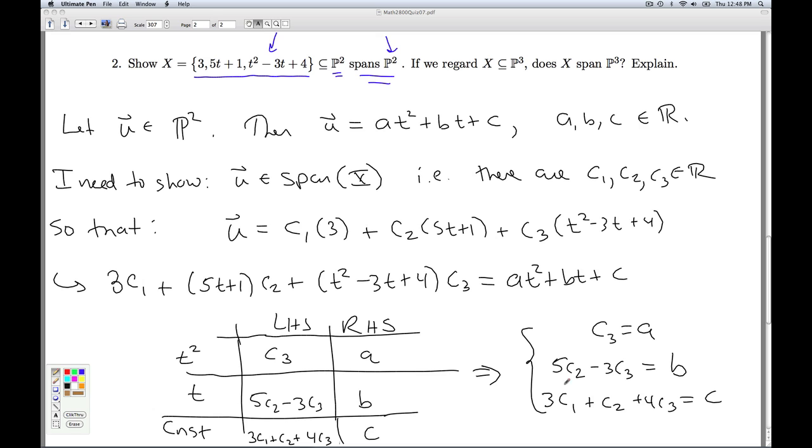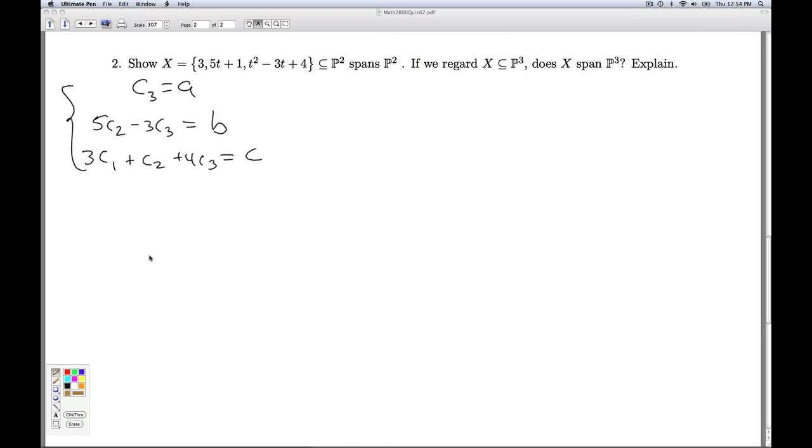And I have to show that this system is consistent for any choice of a, b, and c. Okay, to show that this system of equations is going to have a solution for every choice of a, b, and c, I have three equations and three unknowns, and I am going to write it then as a matrix equation.